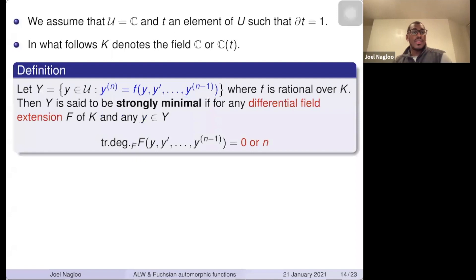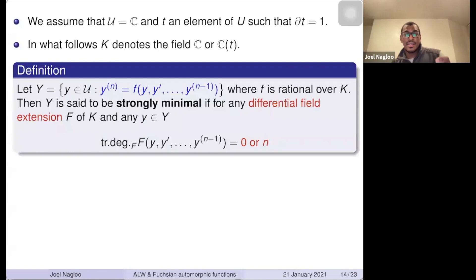I say the solution set is strongly minimal if for any differential field extension and any solution, the transcendence degree of the field generated by y and its derivatives up to order n-1 is zero or one. This is a strong form of saying that no solution of the differential equation satisfies a lower-order equation, even if I change the base field. This non-trivial condition is key.